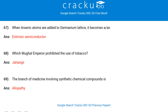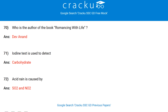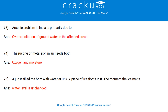When arsenic atoms are added to a germanium lattice, it becomes an extrinsic semiconductor. Which Mughal emperor prohibited the use of tobacco? Jahangir. The branch of medicine involving synthetic chemical compounds is Allopathy. Who is the author of the book 'Romancing with Life'? Dev Anand. Iodine test is used to detect carbohydrates. Acid rain is caused by sulphur dioxide and nitrogen dioxide.